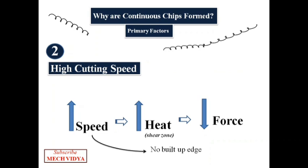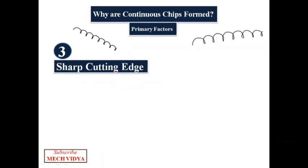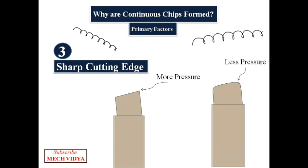The next factor for continuous chip formation is the sharp cutting edge. With sharp cutting tools, highly localized pressures are obtained which shear the material smoothly. But a blunt tool spreads this pressure over a large area causing fracture and discontinuous chips. Pressure equals force divided by cross-sectional area. For the same amount of force applied, pressure will be more with a sharp cutting tool because the area of the sharp tip is less.